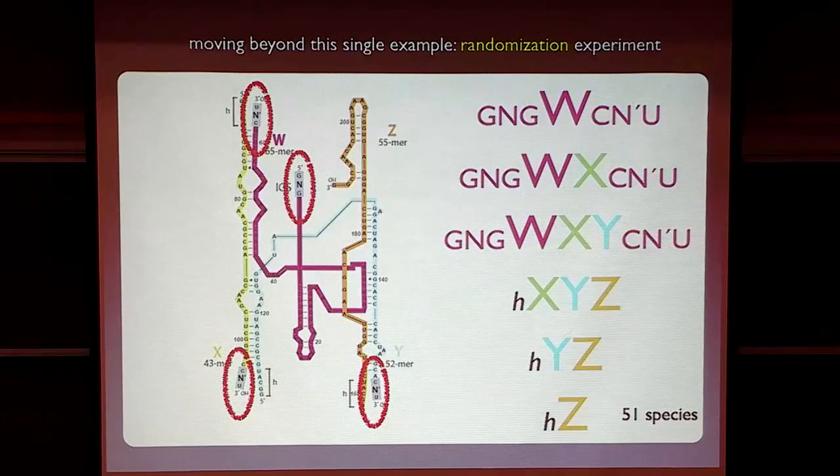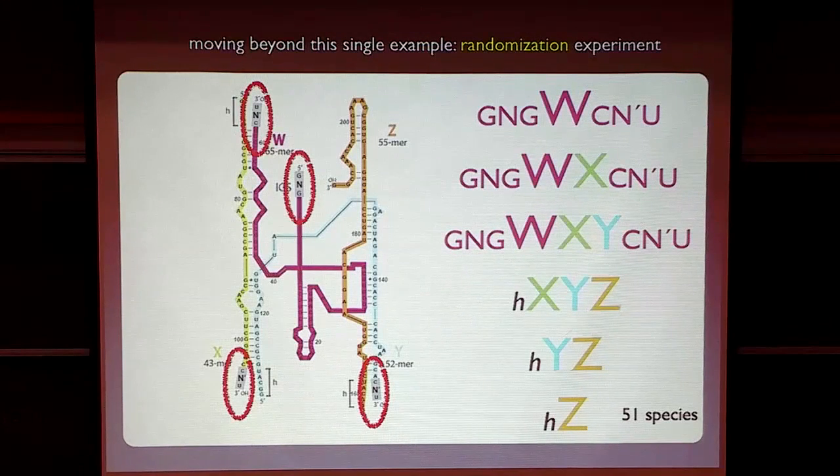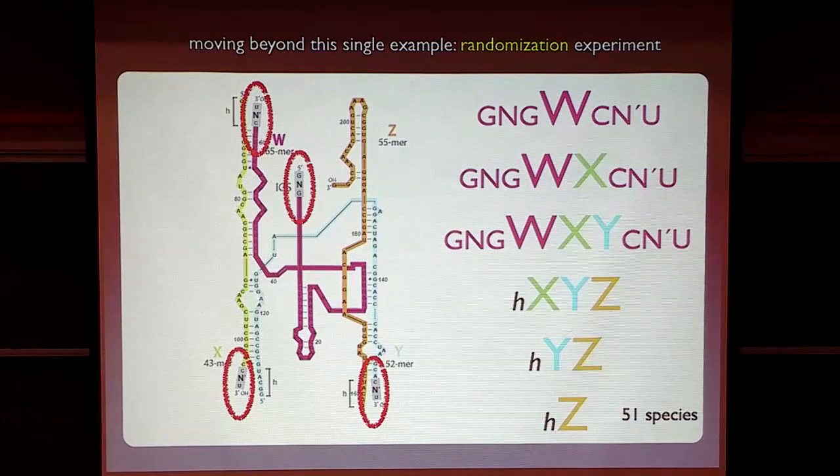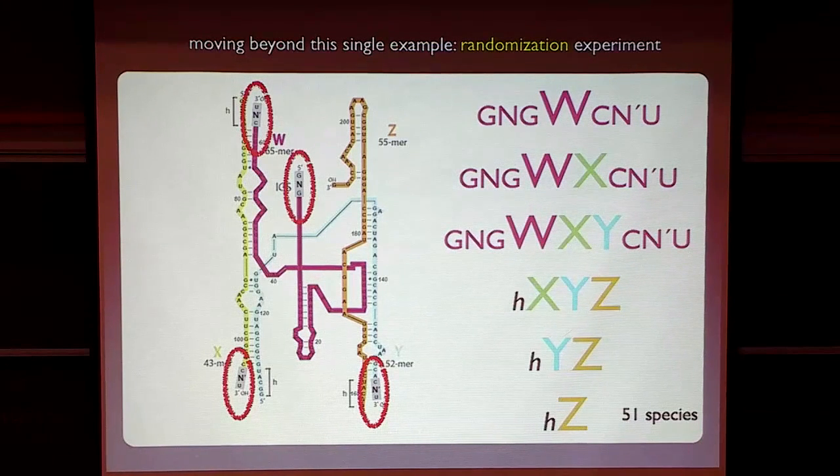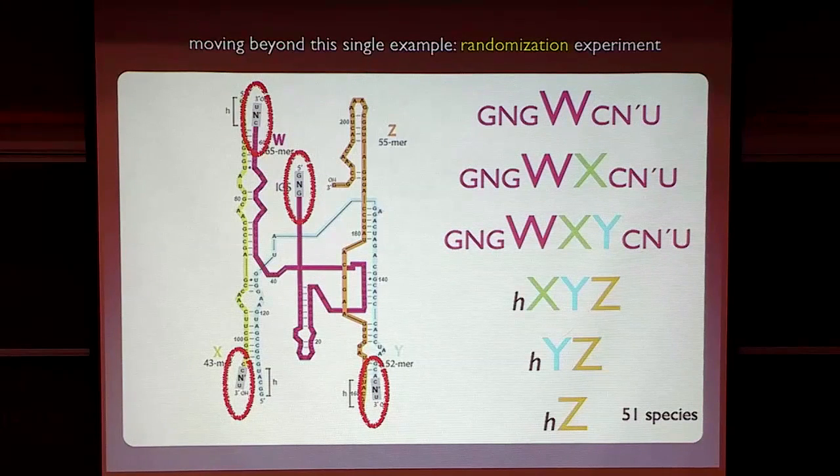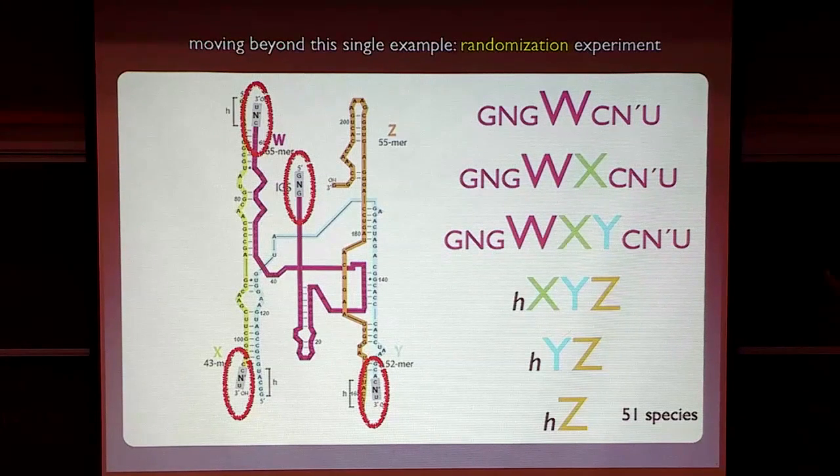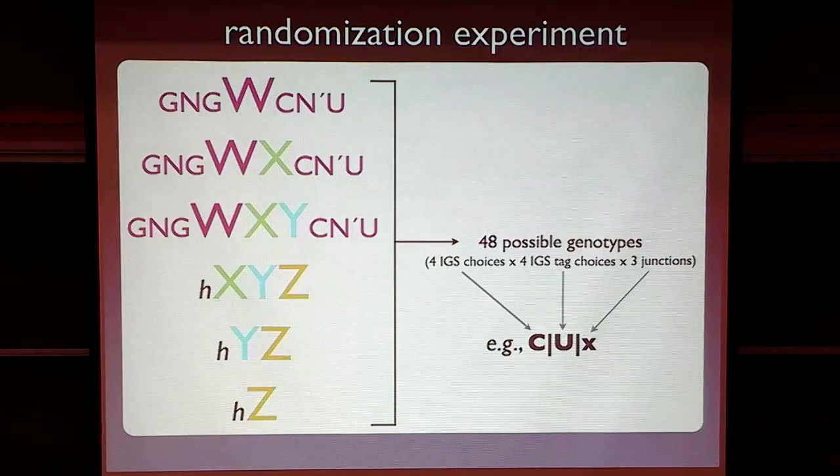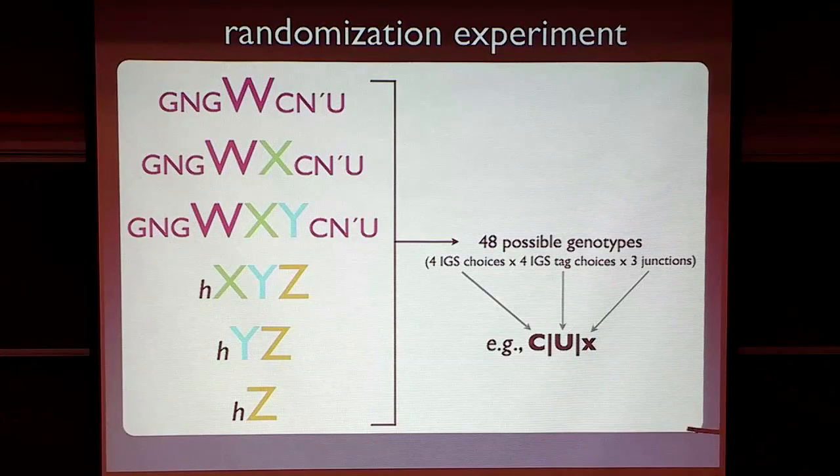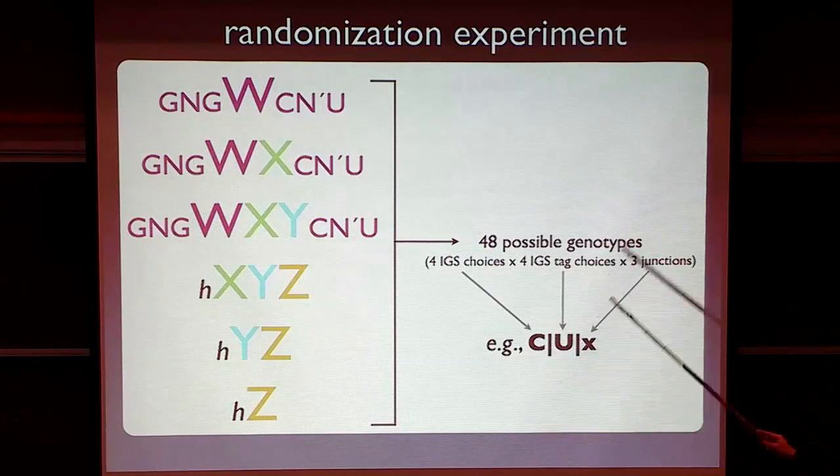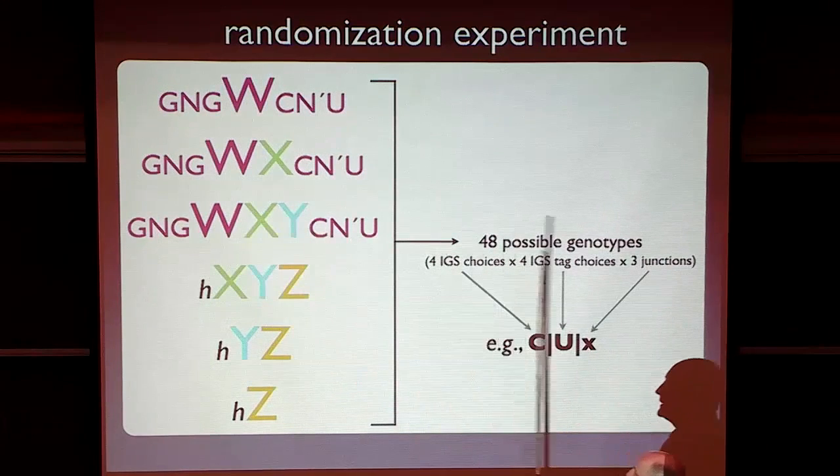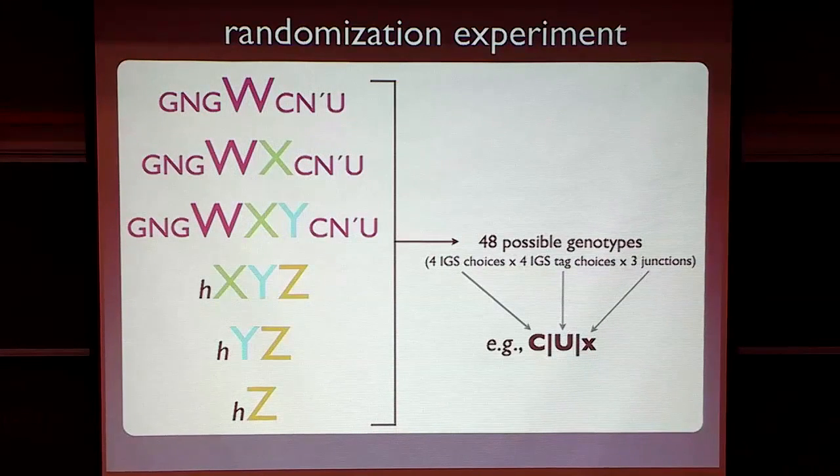Then we did the next logical experiment. Well, let's just randomize these IGSs and the tags, make a whole bunch of different molecules and throw them in a test tube and see what happens. So we randomized the IGSs and the tags. We created these sets of molecules. These sets of molecules, in theory, could assemble a whole variety of molecules. Because now the middle nucleotide of the IGS and the middle nucleotide of the tag are randomized.